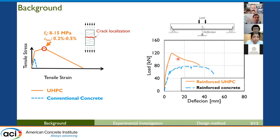This early failure and lower structural ductility is dangerous. This presentation will focus on understanding the causes of this early failure and presenting a design method for achieving high structural ductility in reinforced UHPC beams.